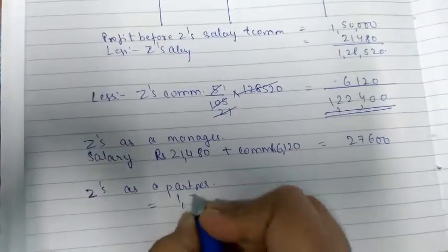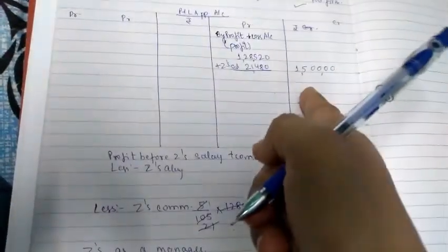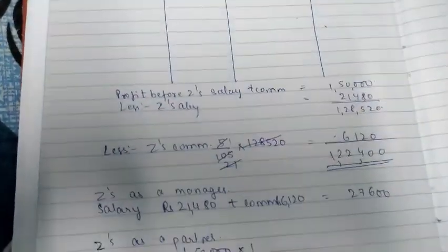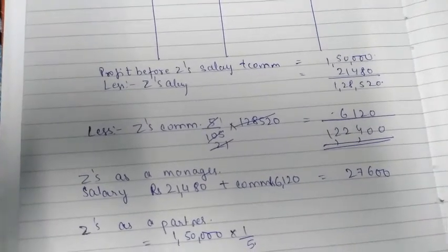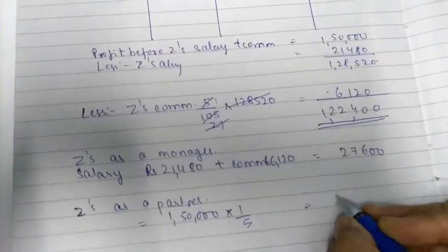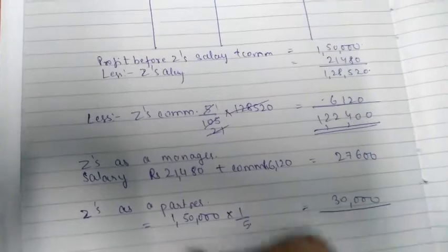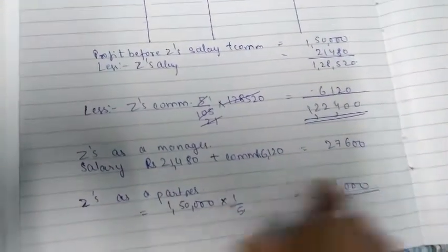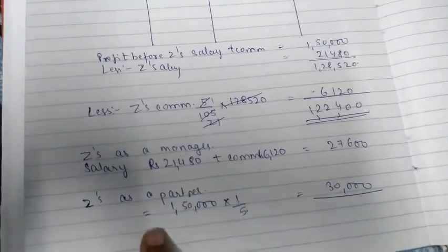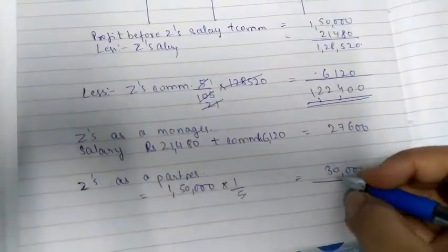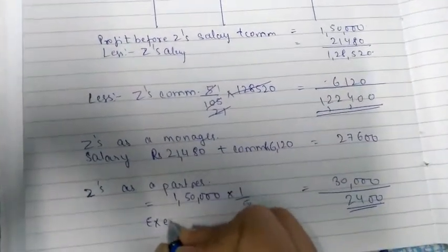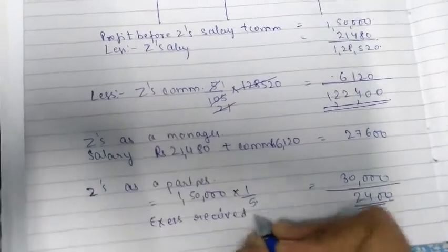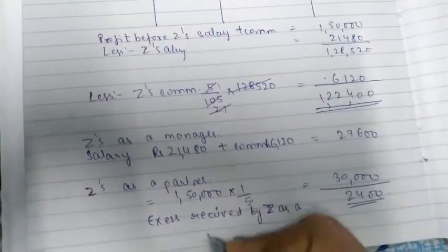Now Z as a partner. Our profit was 1,50,000. We will do 1/5th of this because he was told 1/5th of the profit of the firm. Whichever is more. Let's check. 1/5th of 1,50,000 becomes 30,000. So the excess - this is more than what he got as commission and salary. The excess is 30,000 minus 27,600, which equals 2,400. This is the excess received by Z as a partner.